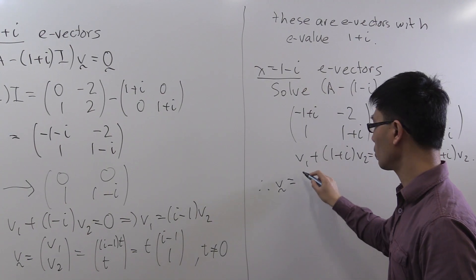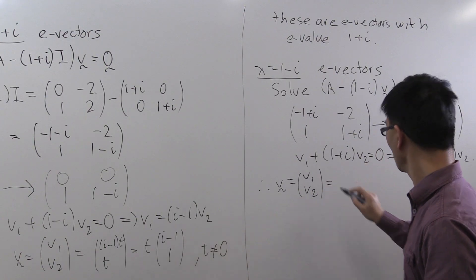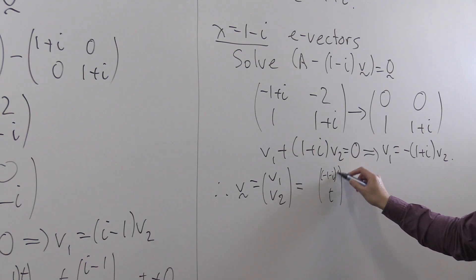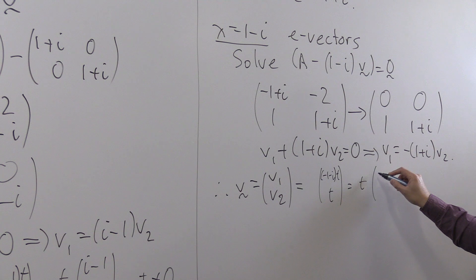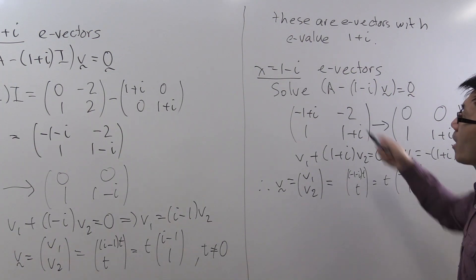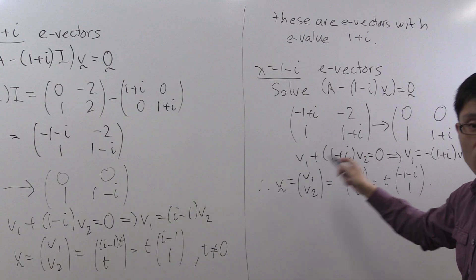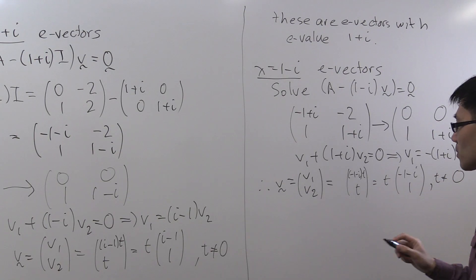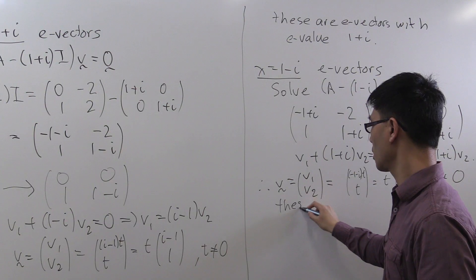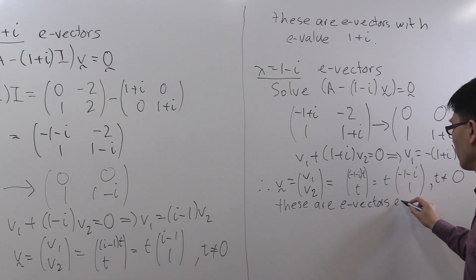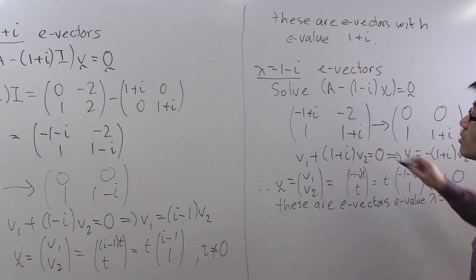So therefore, v equals (v1, v2). So v2 can be anything, let's call it t. And v1 is just minus 1 plus i times that, so it's minus 1 minus i times t. So let's pull out the t. We've got [(-1-i), 1] here. And the eigenvectors with eigenvalue 1 minus i are precisely the non-zero solutions here, so it's whenever t doesn't equal 0. So these are eigenvectors and the eigenvalue we're looking at here is 1 minus i.